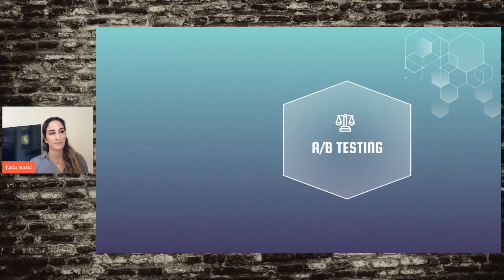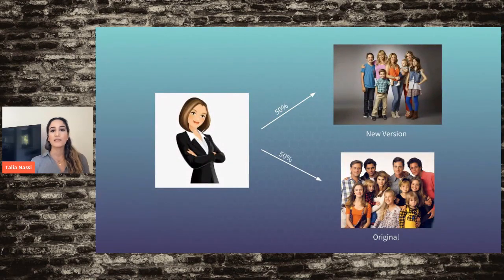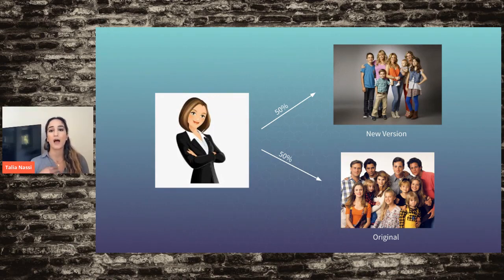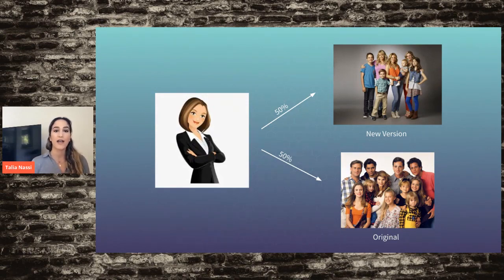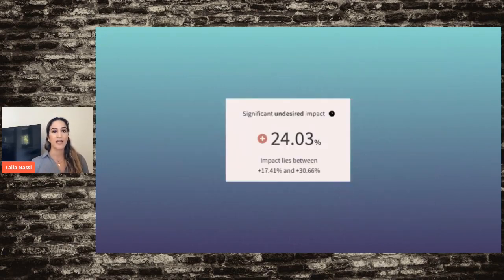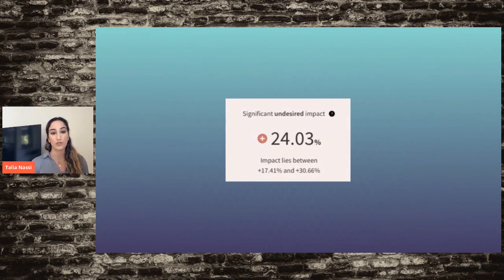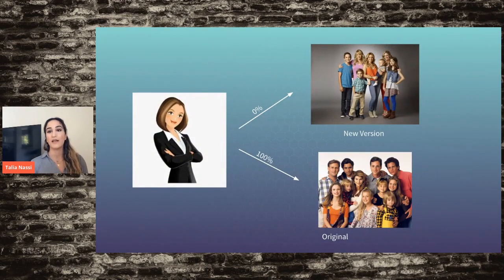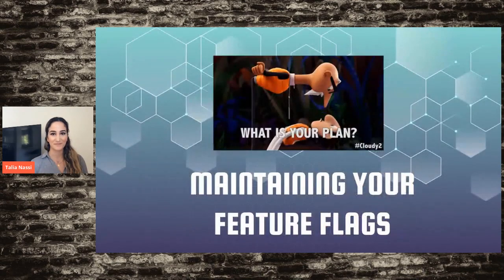Let's look at A/B testing. Say I'm a product owner with a feature that's been doing well, but I want to see if a new version performs better. I allocate 50% of traffic to the old version and 50% to the new version, track for a week, and my metrics dashboard shows a significant undesired impact — a decrease in activity. So I kill the experiment and give all users the original experience.